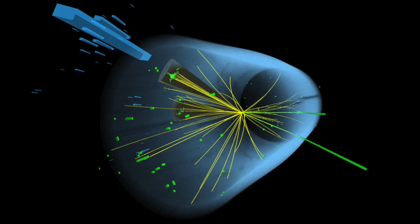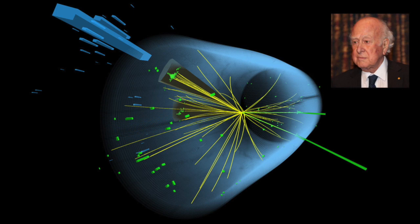The Standard Model includes one other particle which, thanks to the Large Hadron Collider, has now been detected. This is the Higgs Boson, whose possible existence was first mooted by the English physicist Peter Higgs in 1964.